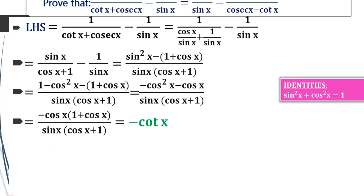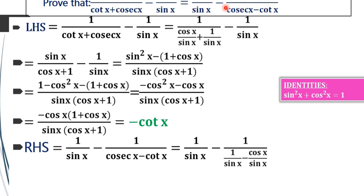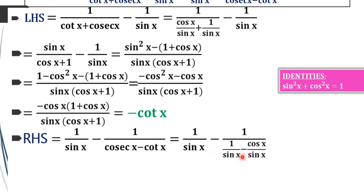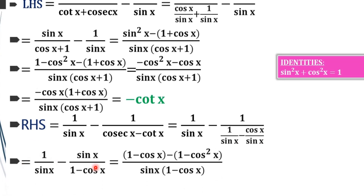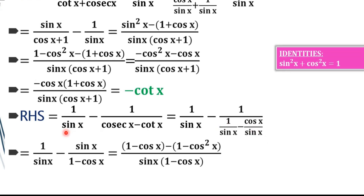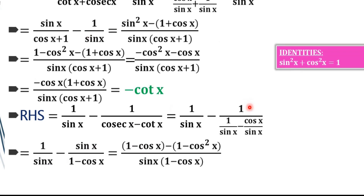Next we take the RHS, that is 1 by sinx minus 1 by cosecx minus cotx. We will proceed using the same steps as above. Cosecx is changed as 1 by sinx, so we have 1 by sinx minus cotx by sinx. By taking LCM, sinx will move into the numerator and we get 1 minus cosx divided by sinx, whole divided by sinx, and that sinx will move into the numerator. On cross multiplying, we get 1 minus cosx minus sinx, and again sinx gives 1 minus cosx.